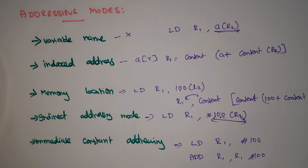These are the basics of how a target language can be represented. We saw what an assembly-level language is, the different types of instructions it supports, and the different addressing modes. Now we'll take some examples and convert intermediate representations into assembly-level code — that is how a code generator works.